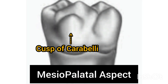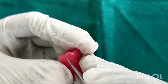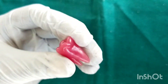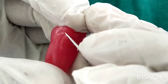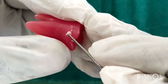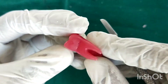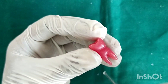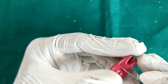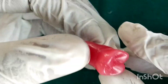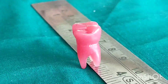Carving the cusp of Carabelli on the mesiopalatal aspect. Finishing the carving with cervical line marking and rounding all the line angles. This is the final look of carving of maxillary first molar.